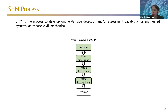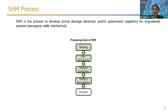Structural health monitoring is the process to develop online damage detection and assessment capability for engineered systems. It is already used in aerospace and mechanical engineering, but in civil infrastructure it is being used, though not as widely as in other fields. The processing chain starts with deciding what you want to sense — the response of interest.